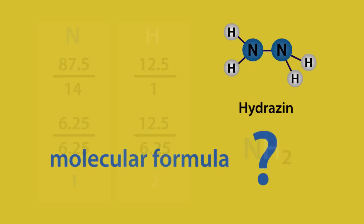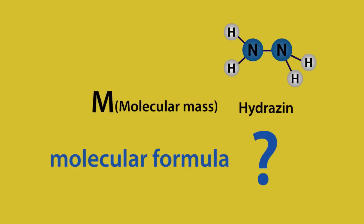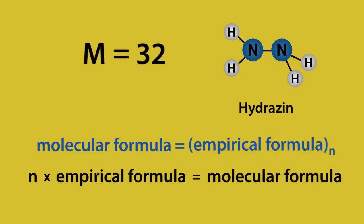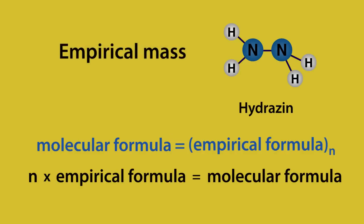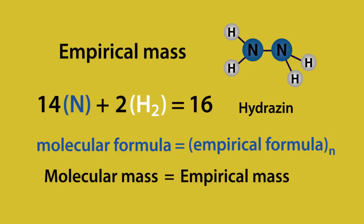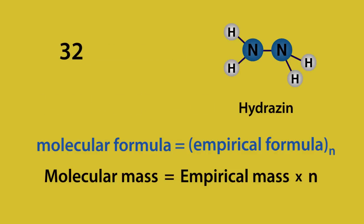But how do we find the molecular formula? The molecular mass for this compound is 32. The molecular formula is the empirical formula times N, where N is the number by which we have to multiply the empirical formula in order to get the molecular formula. I have coined the phrase 'empirical mass' to describe the mass of the empirical formula. So in this case, we have nitrogen, which is 14, plus hydrogen, which is 2, giving us 16. Just as the molecular formula is the empirical formula times N, the molecular mass is the empirical mass times N. So, molecular mass of 32 is N times the empirical mass, 16.